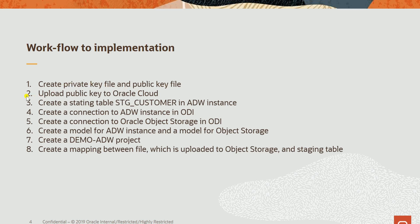Step two: we upload the public key generated in step one to Oracle Cloud. Step three: we create a staging table in the ADW instance. Step four: we create a connection to the ADW instance in ODI. Step five: we create a connection to Oracle Object Storage in ODI. Step six: we create a model for the ADW instance and a model for object storage. Step seven: we create a demo ODI project. And the last step: we create a mapping between the file stored in object storage and the staging table.